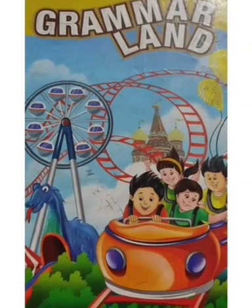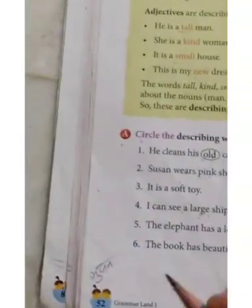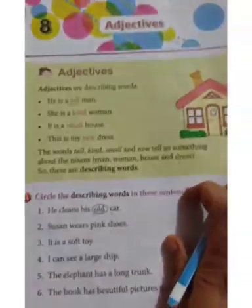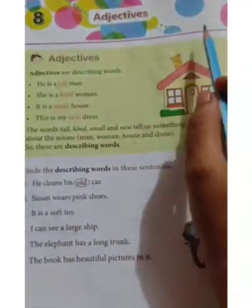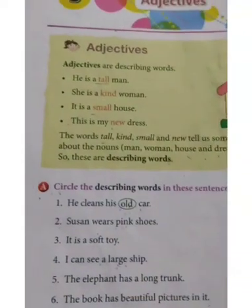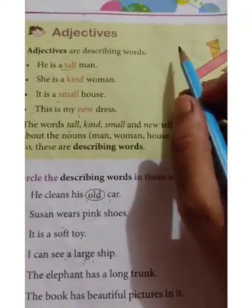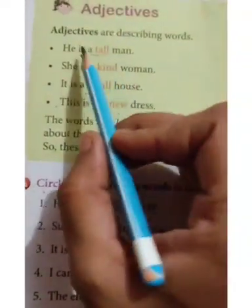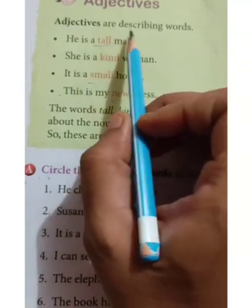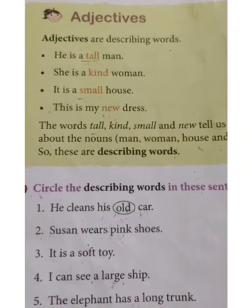Good morning everyone. Check out your Grammar Land book and open page number 52. Chapter 8 - Adjectives. So today we are going to learn about adjectives. Okay kids? Adjectives are describing words — a word that describes a noun.